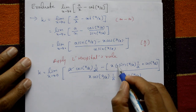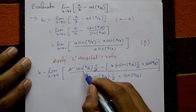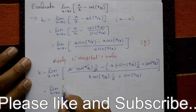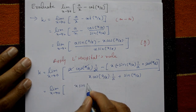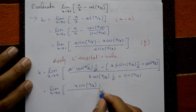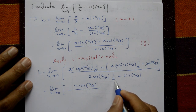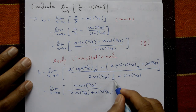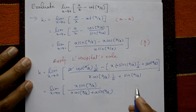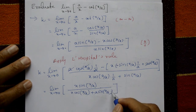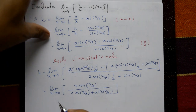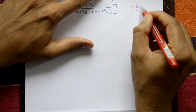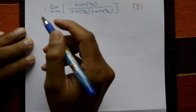After cancellation, the expression reduces to limit x tends to 0 of (x/a)·sin(x/a) divided by [x·cos(x/a)/a + a·sin(x/a)], with the factor of a cancelling through. Taking x = 0 again gives 0/0 form, so differentiate once more.